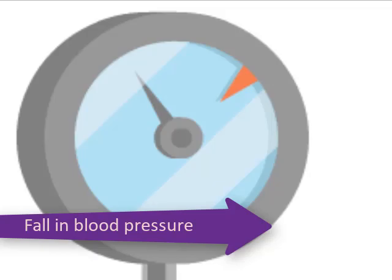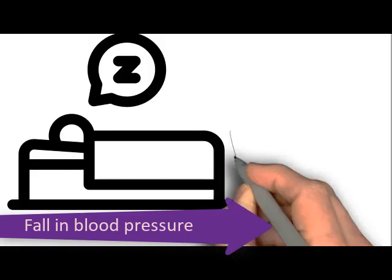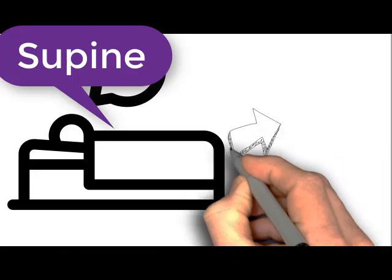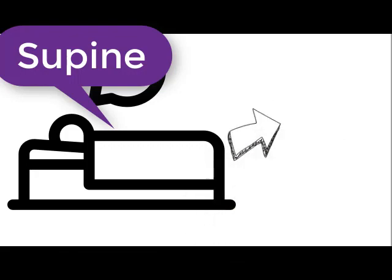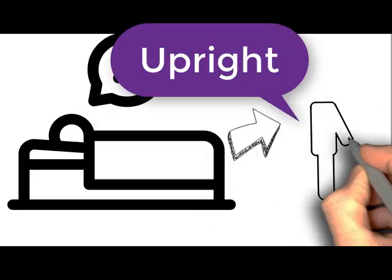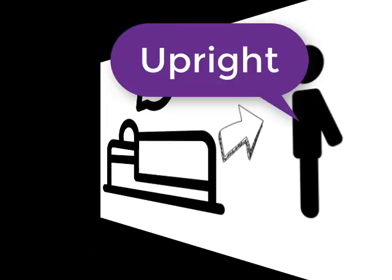Orthostatic hypotension is a fall in arterial blood pressure on assumption of upright posture, or we can say fall in arterial blood pressure upon standing from a supine position, which is the sleep posture.